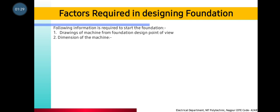Dimension of the machine — its length and width. That means how much length the foundation will have, how much it will be cemented, its width. You have to consider the machine's height and the machine's weight. Because the foundation is built accordingly based on the machine's weight.